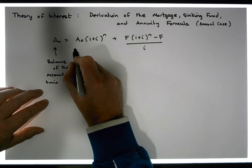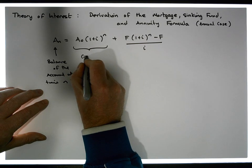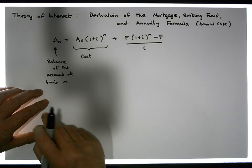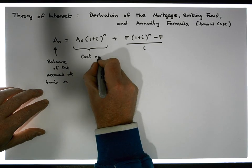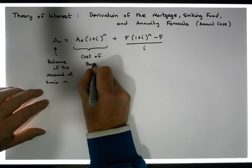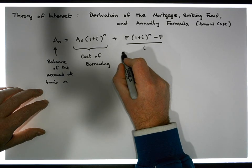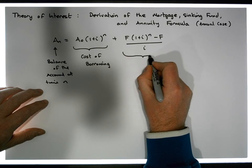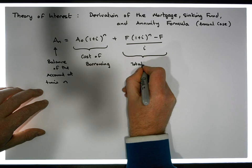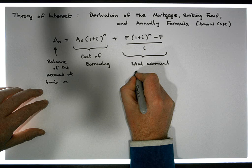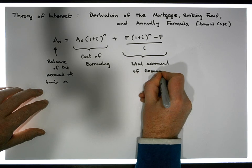This part of the formula is going to represent — when we consider it from a mortgage perspective — the cost of borrowing. And this other part of the formula is going to represent the total accrual of repayments.